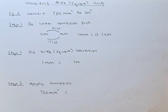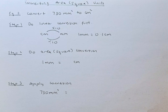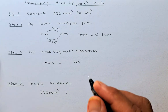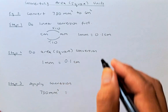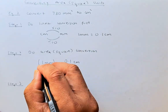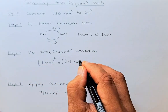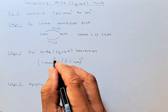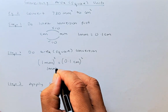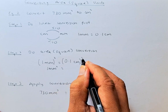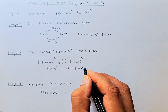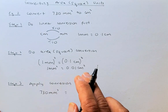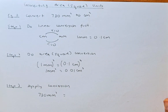The next step, you have to do an area or square conversion. To convert millimeter squared to centimeter squared, you know that 1 millimeter is 0.1 centimeter. Then you square both sides. When you square both sides, 1 millimeter squared — 1 squared is still 1 mm squared. And 0.1 squared is going to be 0.01 centimeter squared. So 1 millimeter squared is equal to 0.01 centimeter squared.